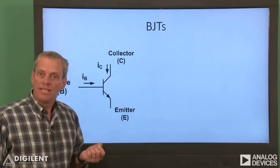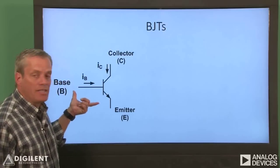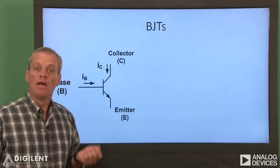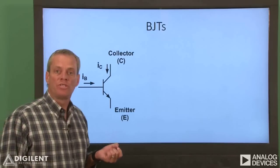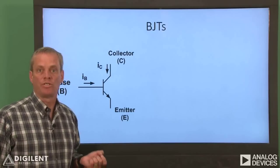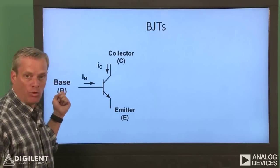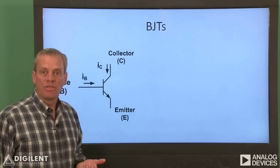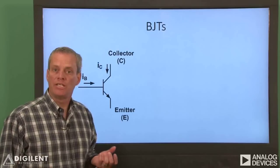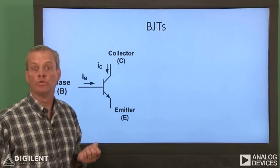Although the BJT is commonly modeled as a current-controlled current source, increasing the base voltage tends to also increase the base current. Thus, we can also use the BJT to implement a voltage-controlled current source where the collector current is controlled by the base voltage. As with the MOSFET, the collector current must be supplied by an external source. The BJT itself doesn't create the collector current — it only controls it.